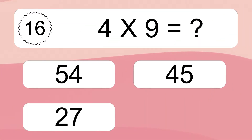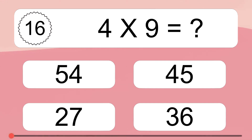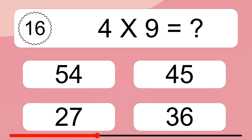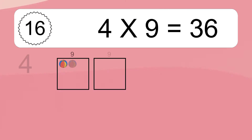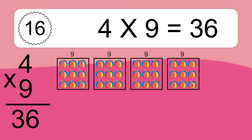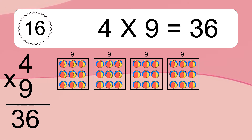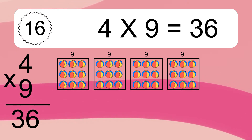4 times 9 equals what? 4 times 9 equals 36. We have 4 boxes and each box has 9 colorful balls inside. If you count all the balls in all the boxes together, you will have 4 times 9 balls. This equals 36 balls.